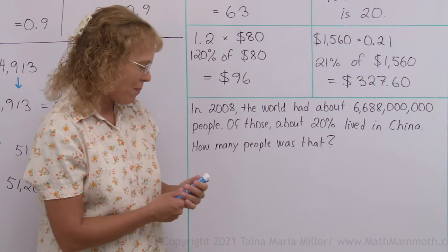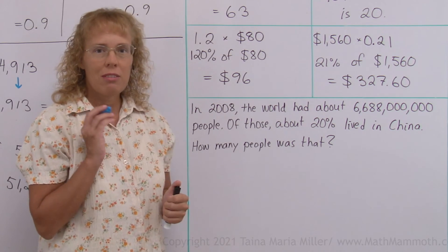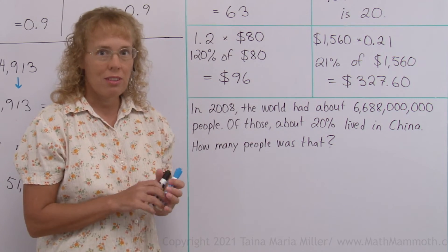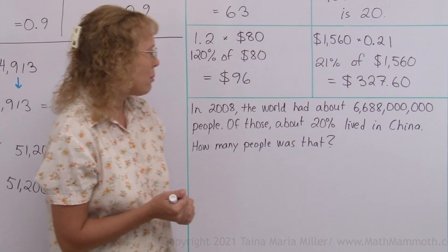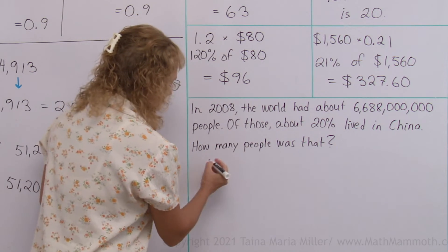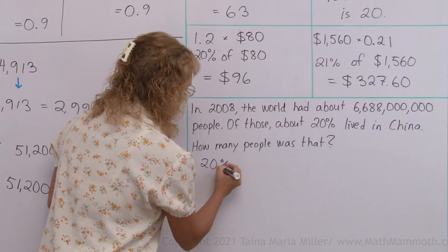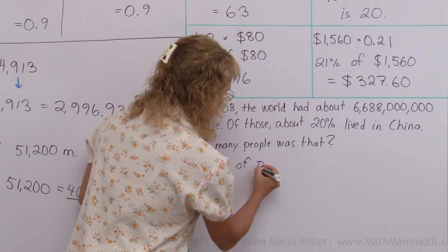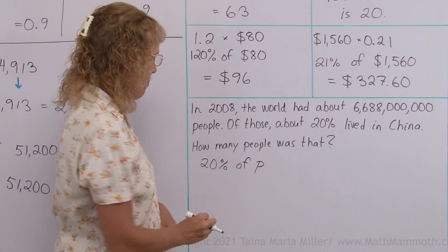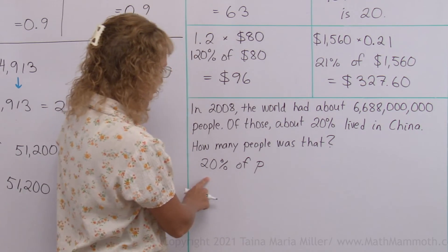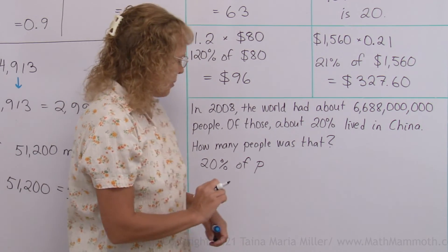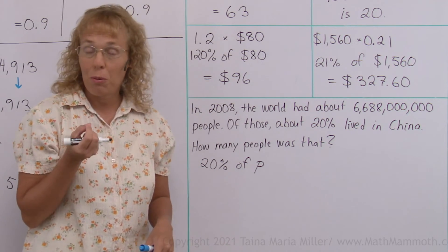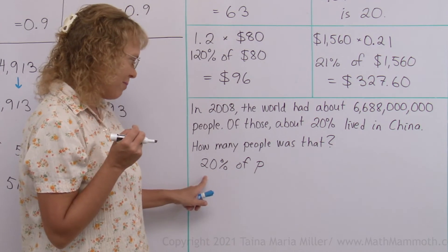It's a big number and I'm going to represent it using a variable, a letter, because it's such a long number to write. So we need to find 20% of, I'm going to use the letter P for population. We need to find 20% of P. And I can think of several ways to find this.